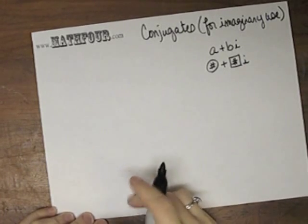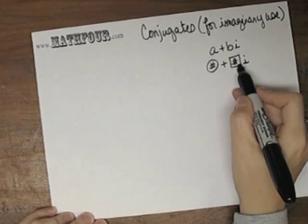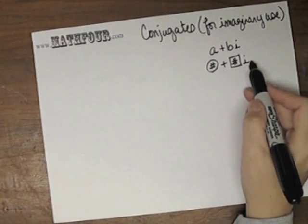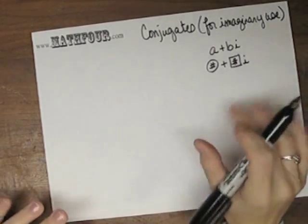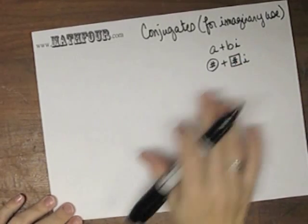So these two are regular old numbers, and i is your little imaginary number. So this is your standard, nice form of an imaginary or a complex number.